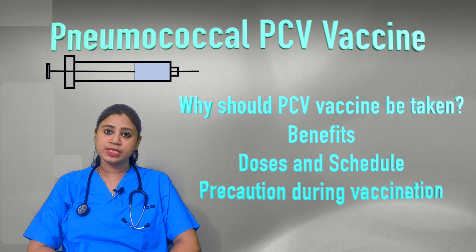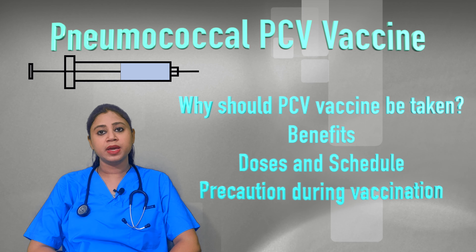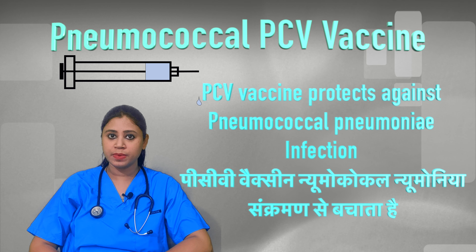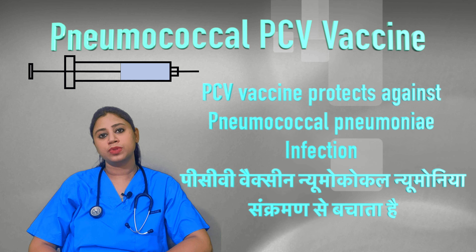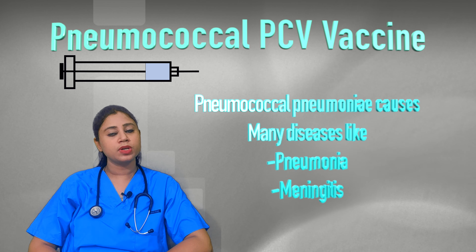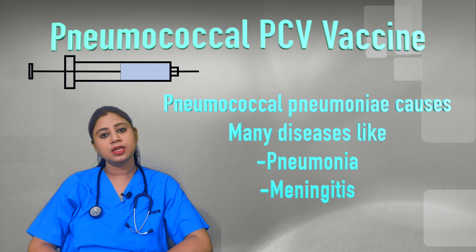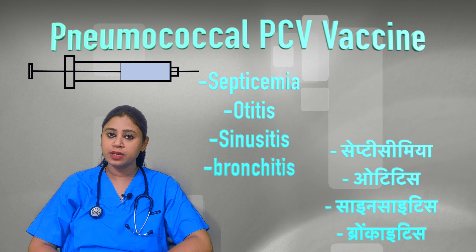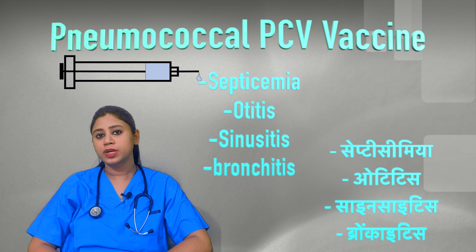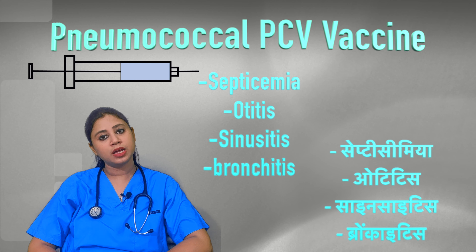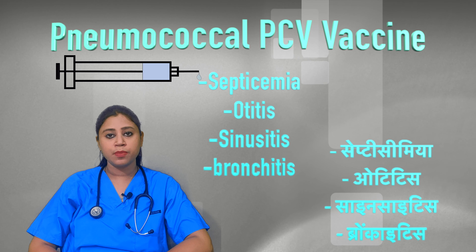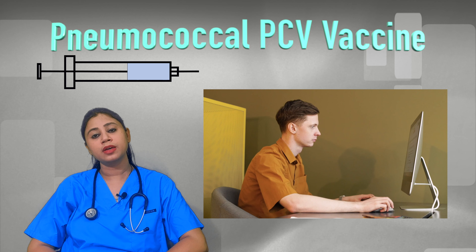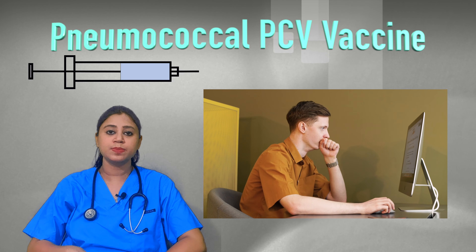The Pneumococcal Conjugate Vaccine protects against a bacteria called Streptococcal Pneumonia. This bacteria spreads through respiratory droplets and can cause diseases such as meningitis, septicemia, otitis, sinusitis, bronchitis, and other infections.